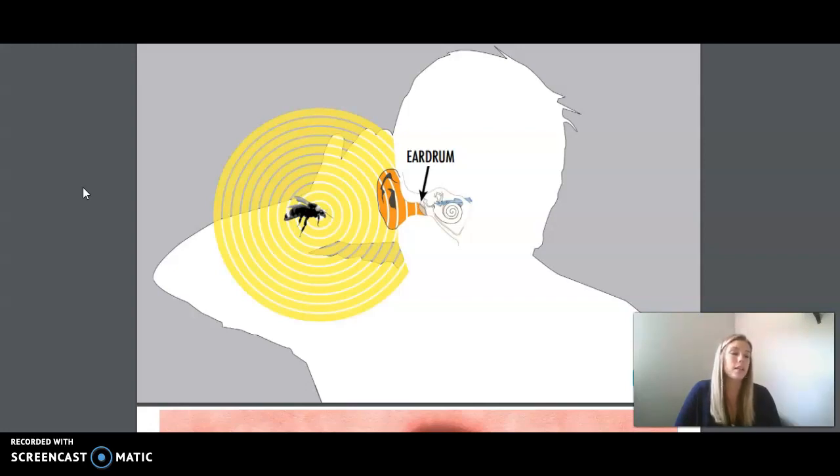For some people, hearing is difficult or even impossible when one or more parts of this system are not working properly. When people are not able to hear anything, or perhaps only a very few sounds, we say they are deaf.